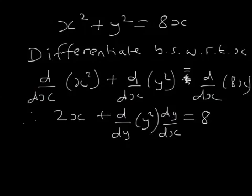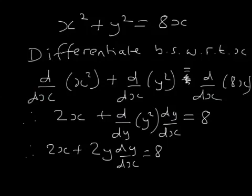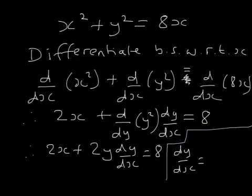So therefore, we get 2x plus, well, differentiate y squared with respect to y, that's easy, 2y. We've got dy by dx. That equals 8. And so from that, once again I'm squashing it in, which you must not do in your work. From this, I can say dy by dx is 8 minus 2x over 2y, which does simplify to be 4 minus x over y.